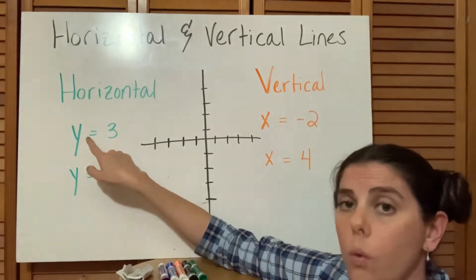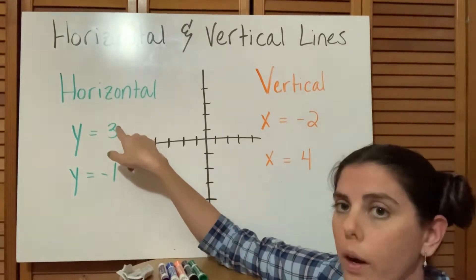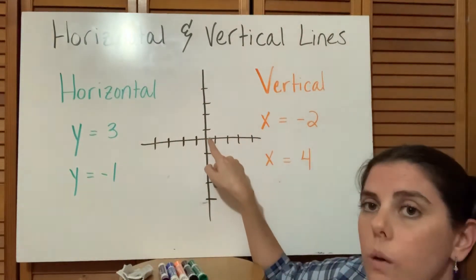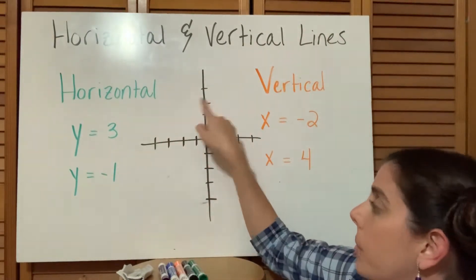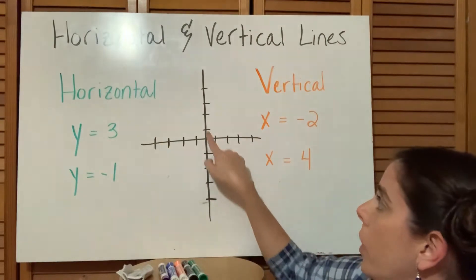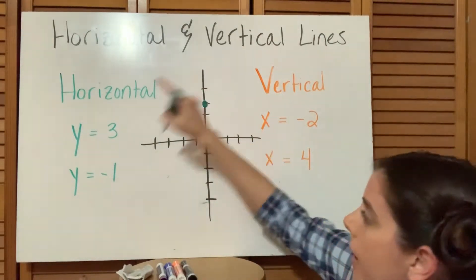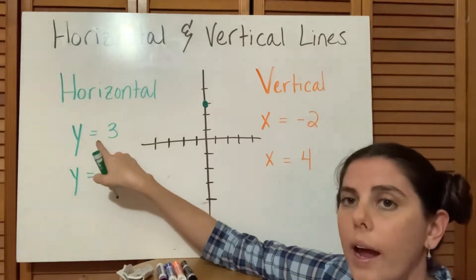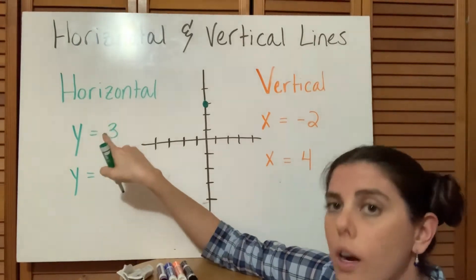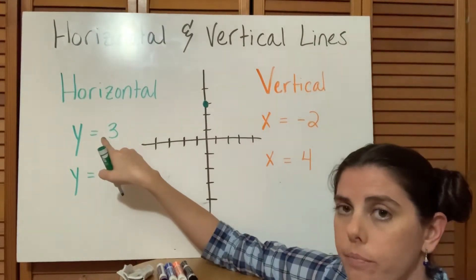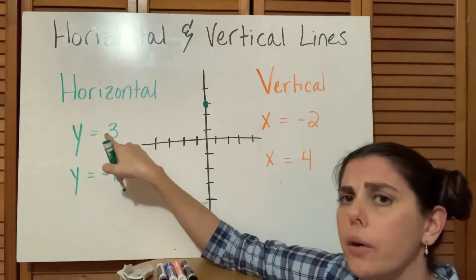Where is 3? Well, we start at the origin and count 3 up because this is a positive 3. We go up 3, so if we plot that, this is telling us where that line is crossing the graph. We haven't talked a lot about intercepts or slope yet and we'll get into that in other sections in chapter 4.